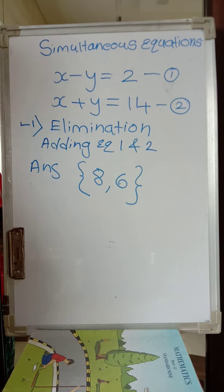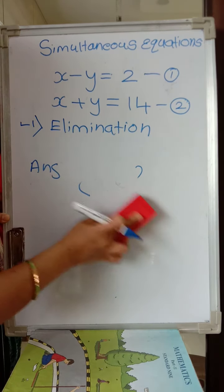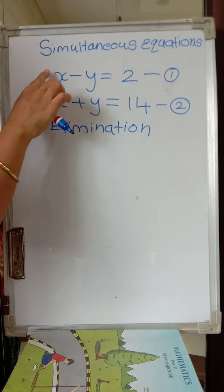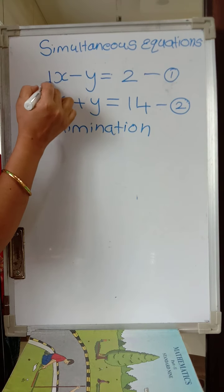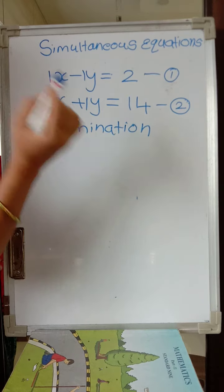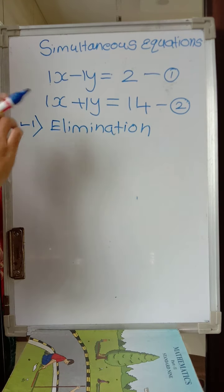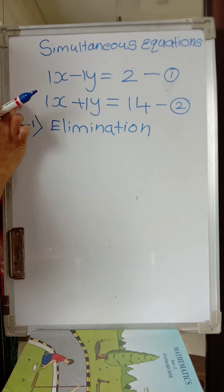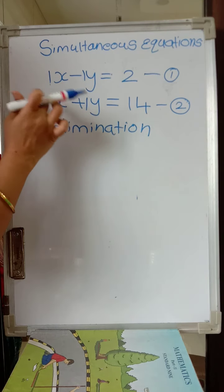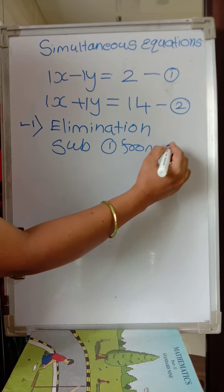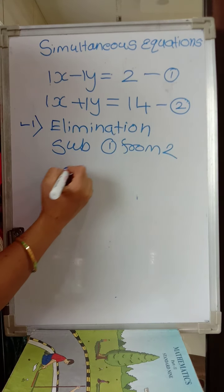Now let us try the same by doing subtraction. In this method, the coefficients of x or y should be the same, then you can directly add or subtract. Here both equations have coefficient 1 for both x and y, so no problem. The coefficient of x is 1x in both; y is 1y in both. Either x or y coordinate must have the same coefficient for this to work directly.